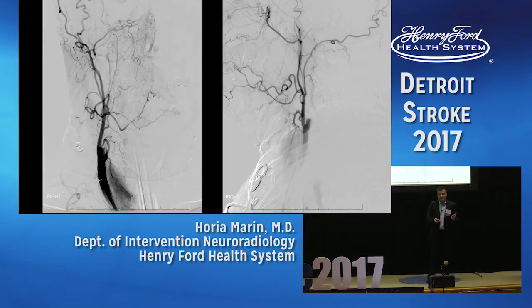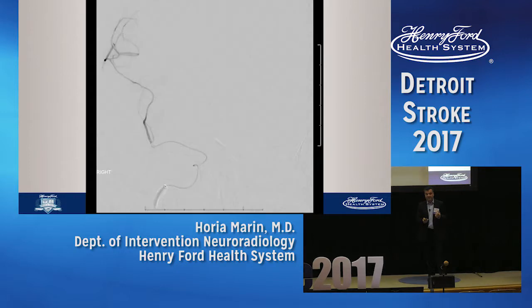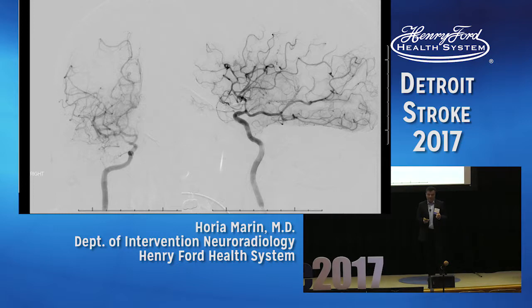This patient underwent mechanical thrombectomy under general anesthesia, with a carotid stent placed first, followed by the intracranial thrombectomy, achieving TICI 2B reperfusion.